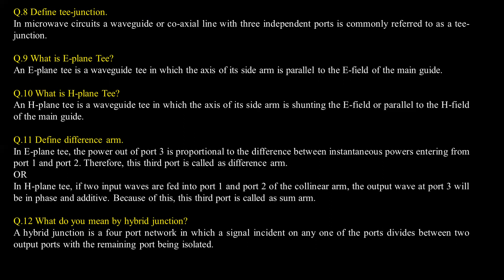Define difference arm. According to the E-plane and H-plane T, the power output of port 3 is proportional to the difference between instantaneous powers entering from port 1 and port 2. Therefore, this third port is called the difference arm. According to E-plane T, if two input waves are fed into port 1 and port 2 of the collinear arm, the output wave at port 3 will be in phase and additive. Because of this, this third port is called the sum arm.